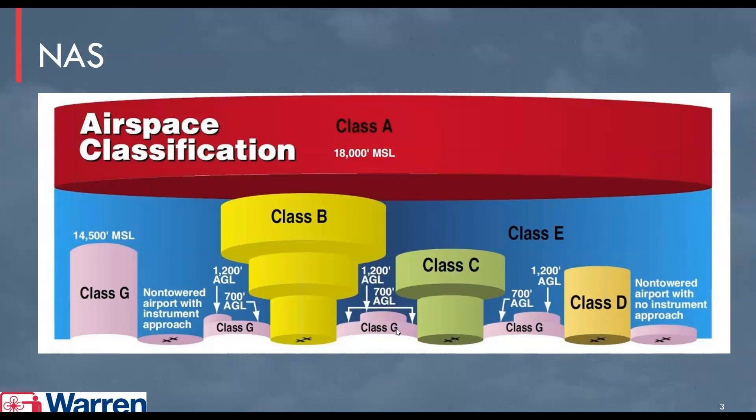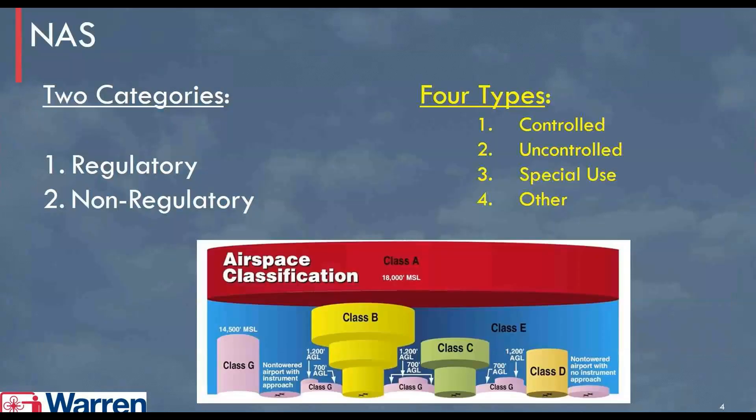Let's talk more about this because I know it can be confusing, especially for non-aviators. The NAS is broken down into two categories: regulatory and non-regulatory — those airspaces regulated by the FAA and those not. There are four types of airspace: controlled, air traffic controlled, uncontrolled (usually Class G), special use airspace, and other airspace, which we'll review as well.